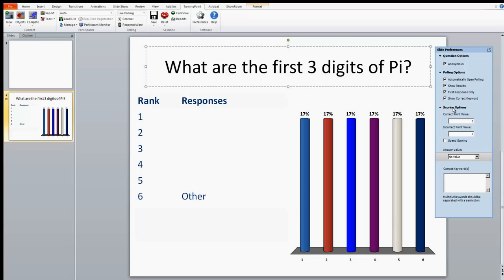In Scoring Options, scoring options includes giving points for correct or incorrect answers, and speed scoring. When speed scoring is selected, the point values will decrease relative to the time that the polling is kept open.